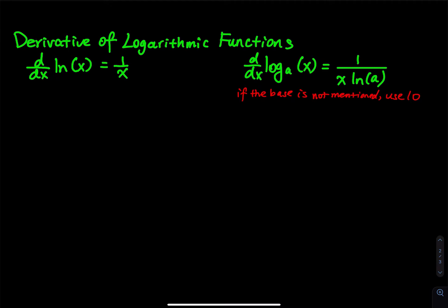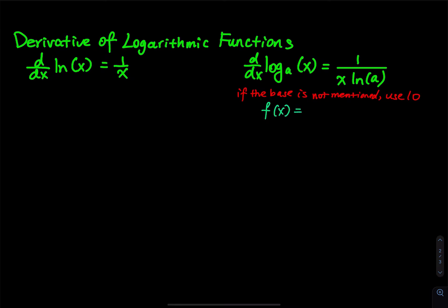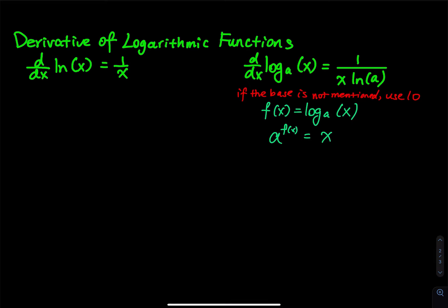Let's see how we get the formula 1/(x·ln(a)). We start with f(x) = log base a of x — this is called logarithm form. Then we convert from logarithm form to exponential form: a raised to the f(x) power equals x.